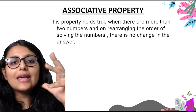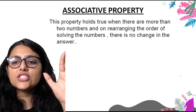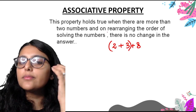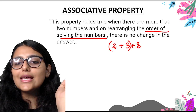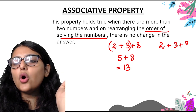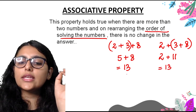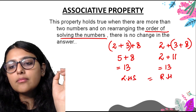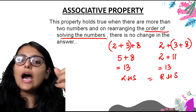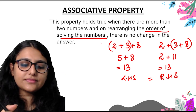Next is the associative property. This property holds true when there are more than two numbers and rearranging the order of solving them does not change the answer. For example, with three numbers 2 plus 3 plus 8: solving 2 plus 3 first gives 5, then plus 8 gives 13. Changing the grouping to 3 plus 8 first gives 11, then plus 2 also gives 13. The answer is the same — this is grouping, or association. We checked this for whole numbers; now we check it for integers.